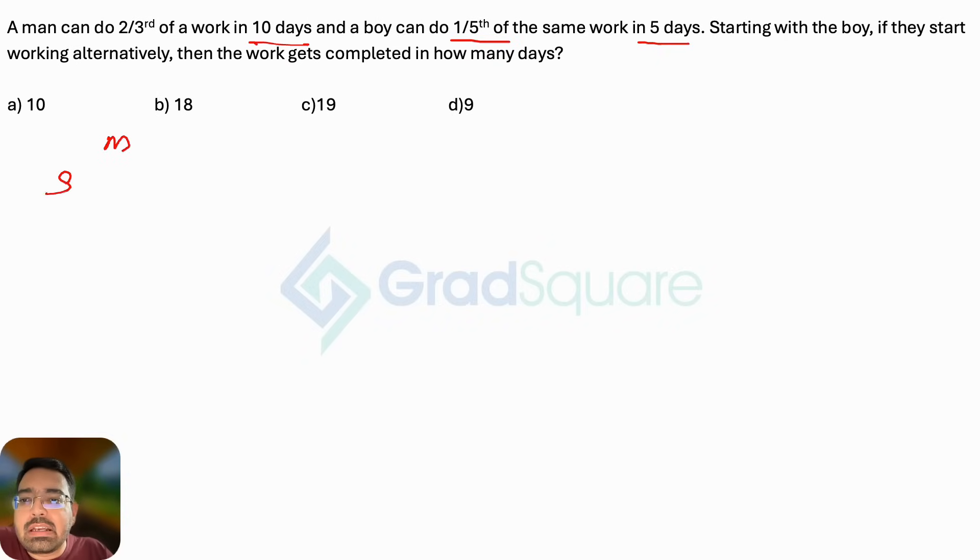So if I look at the man, two-thirds of the work is getting done in 10 days. That means the total work will get done in how many days? Two parts out of the three parts of the total work is getting done in 10 days, so one part will be done in 5 days, so three parts will be done in 15 days.